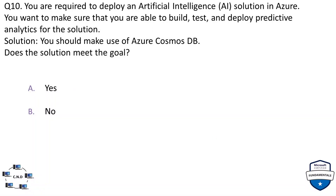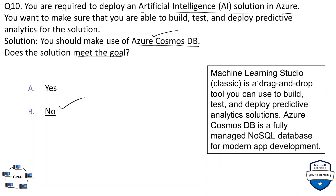Question number ten: you are required to deploy an artificial intelligence solution in Azure and you want to be able to build, test, and apply predictive analytics for the solution. The solution proposed is to use Azure Cosmos DB. The correct option is no. Machine Learning Studio is the right solution — it is a drag-and-drop tool you can use to build, test, and apply predictive analytics solutions. Azure Cosmos DB is a fully managed NoSQL database for modern app development.